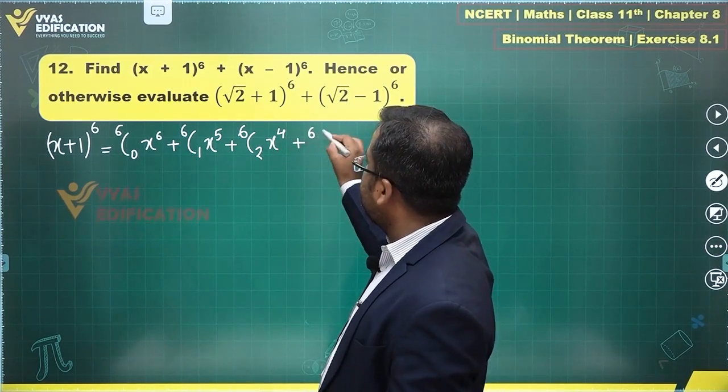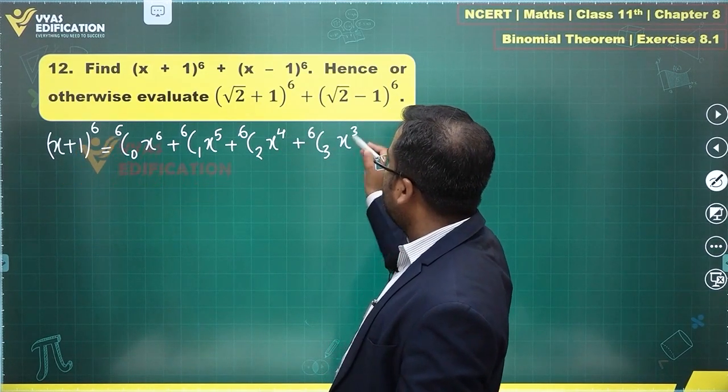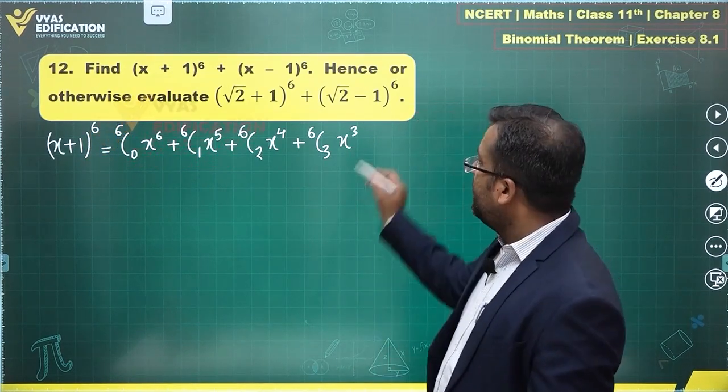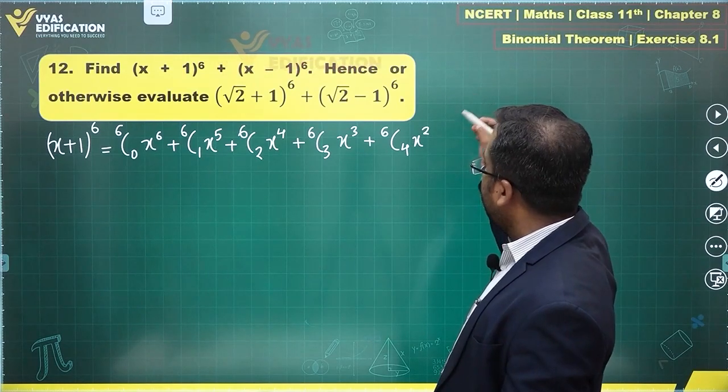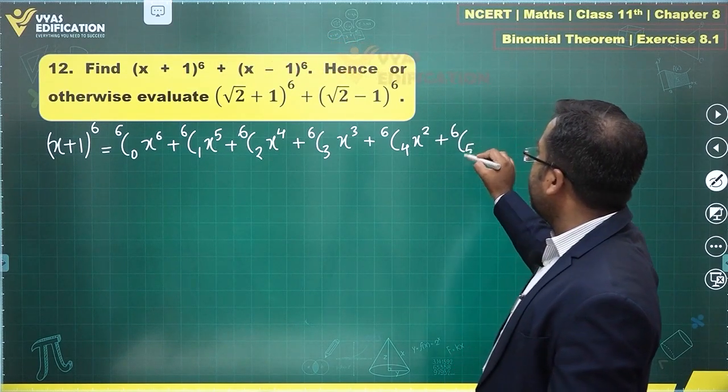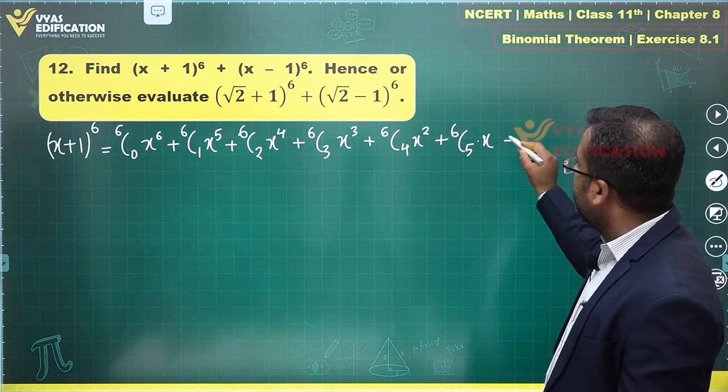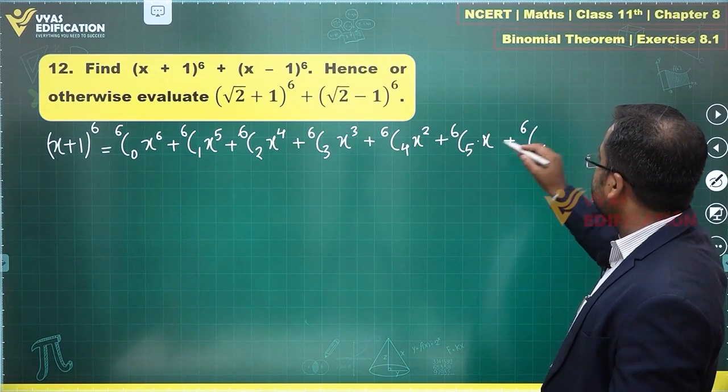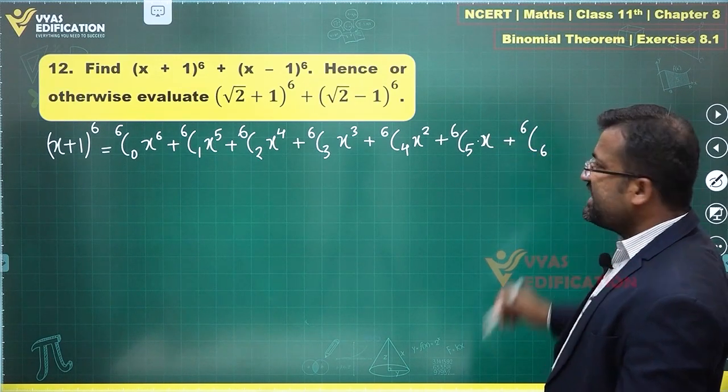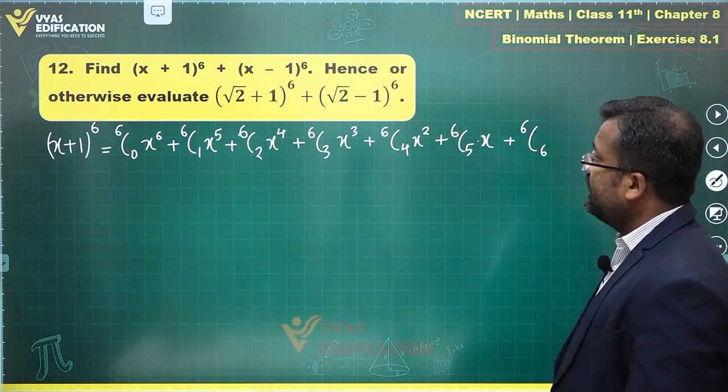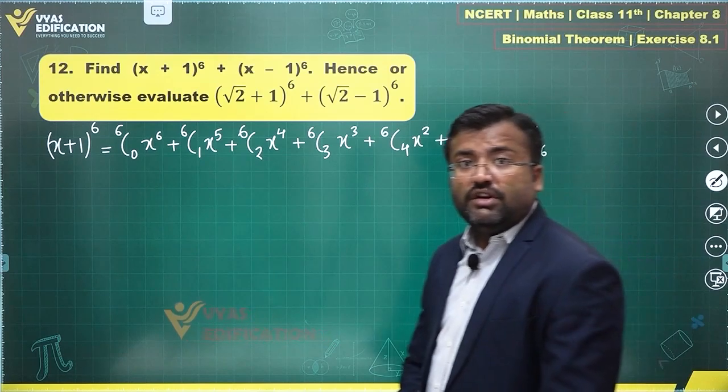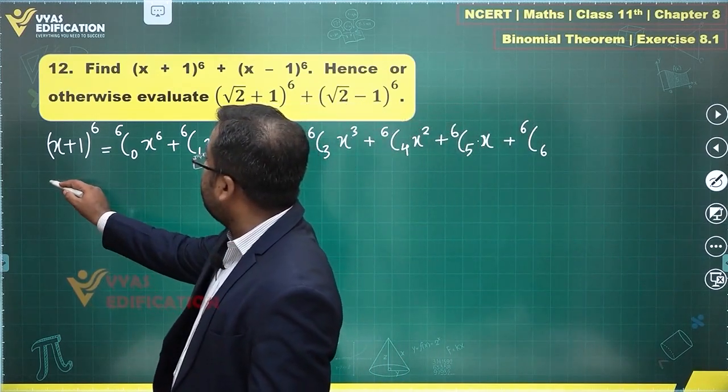The next term will be 6C3·x^3·1^3, which is 1 only, plus 6C4·x^2·1^4, which is 1. 6C5·x·1^5, which is 1 again. 6C6·x^0·1^6, which is 1. So this is what you get: (x+1)^6. What about the next one, (x-1)^6?